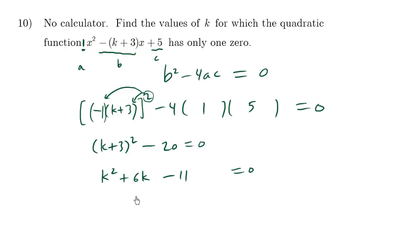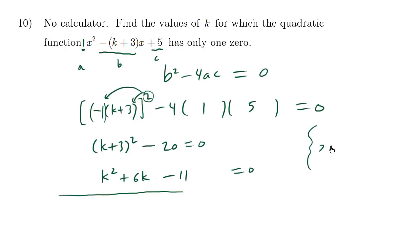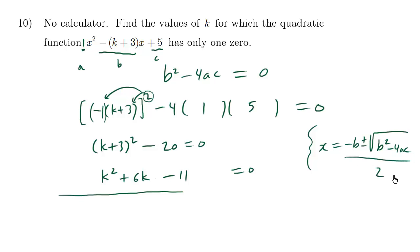Unfortunately we can't factor this. However, you can use your graphing calculator to solve for approximate values of k. For the exact values, we use the quadratic formula. Recall that k is the same thing as your x value, and the quadratic formula is x equals negative b plus or minus the square root of b squared minus 4ac, all over 2a. We'll just replace the x's with k's.